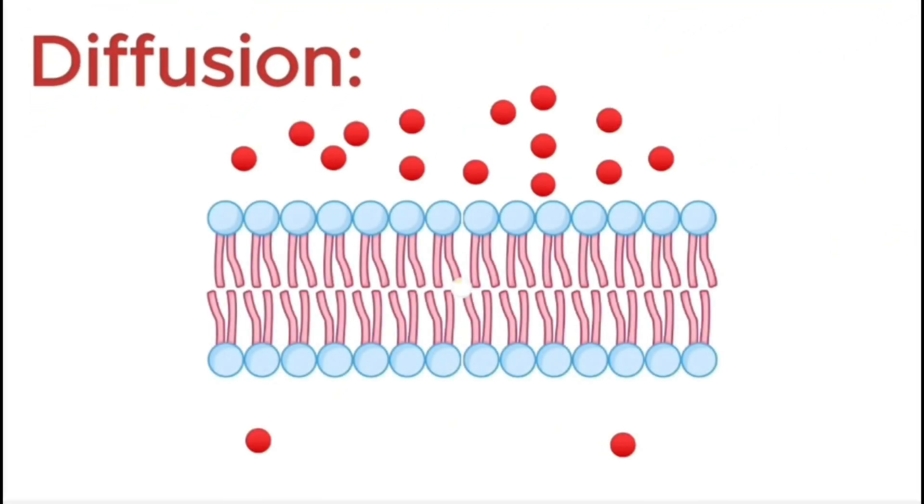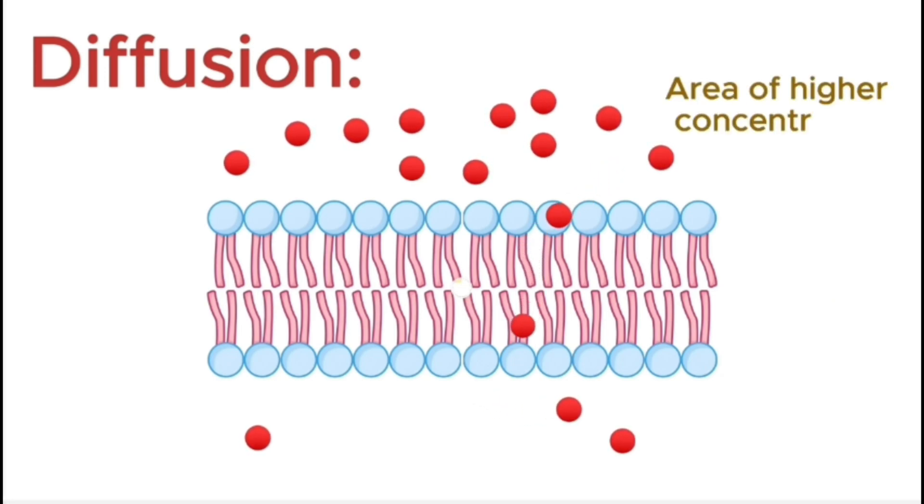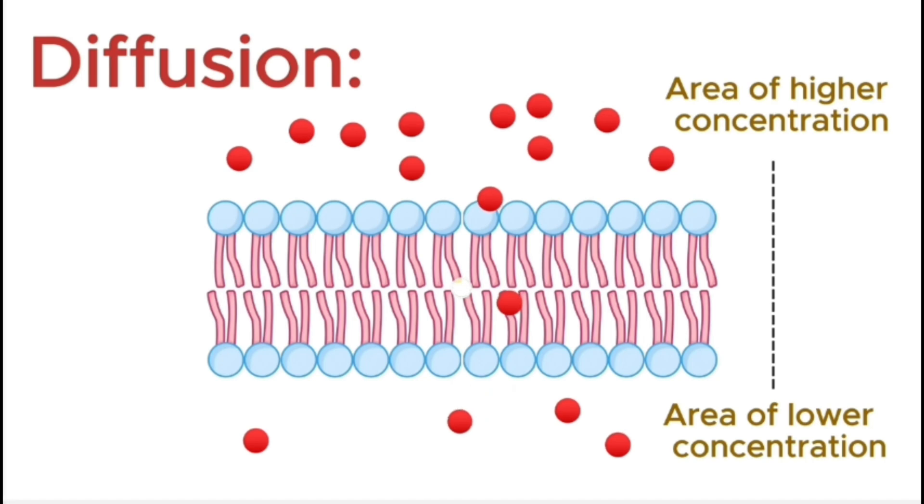Diffusion is a type of passive transport, which means it doesn't require any energy or ATP from the cell. In simple terms, diffusion is the movement of molecules from an area of higher concentration to an area of lower concentration, until equilibrium is reached.